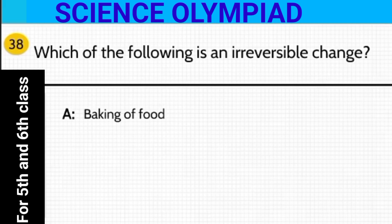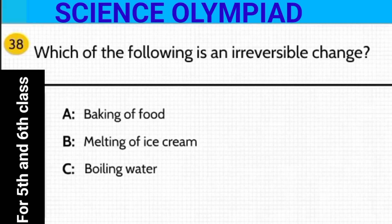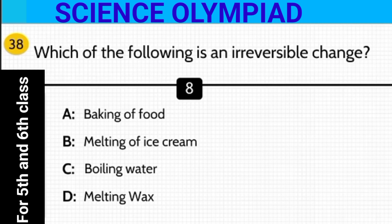Which of the following is an irreversible change — a change which cannot be reversed? Is it baking of food, melting of ice cream, boiling water, or melting wax? The answer is option A — baking of food. The rest of the options can be reversed.